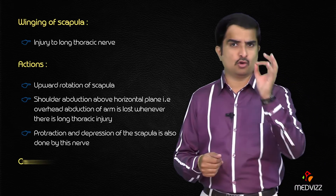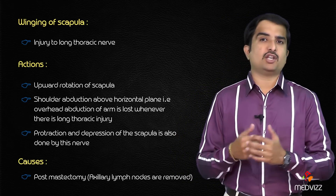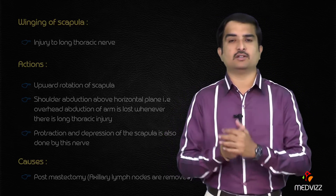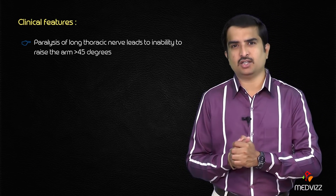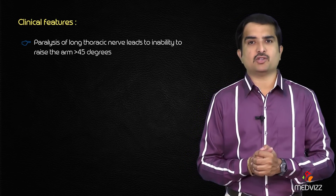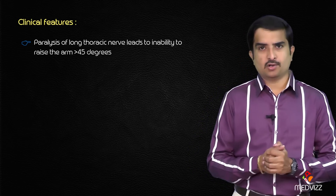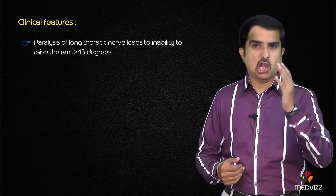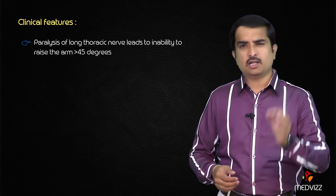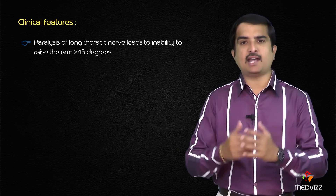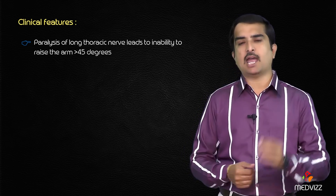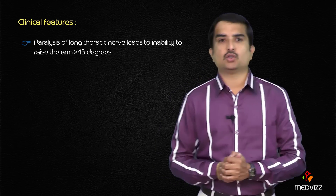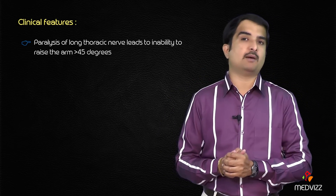Lesion of the long thoracic nerve is most commonly seen during mastectomy, when removing axillary lymph nodes. This leads to paralysis of the serratus anterior, and abduction of the arm is not possible beyond 45 degrees. Beyond 45 degrees, serratus anterior is needed along with deltoid; even though deltoid is normal, the power is not enough to lift the arm above 45 degrees.